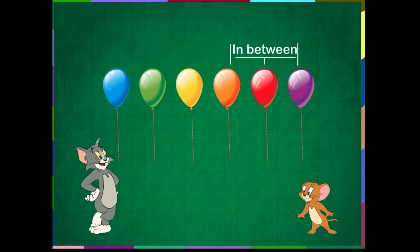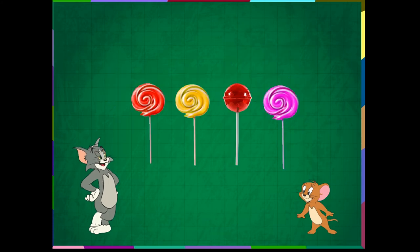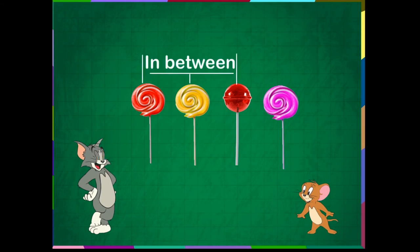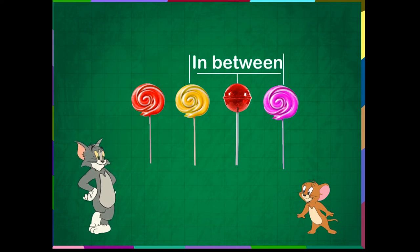The red balloon is in between the orange and the violet balloons. The yellow candy is in between the red candy and the lollipop. The lollipop is in between the yellow candy and the pink candy.